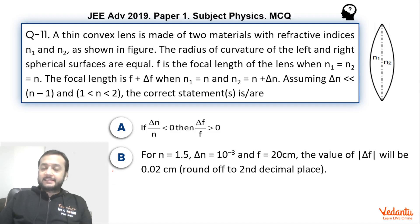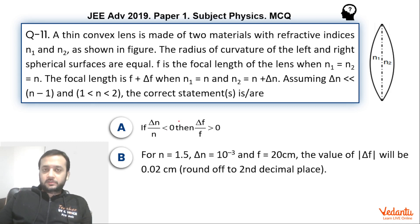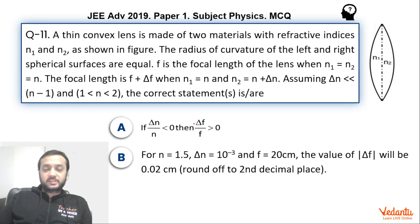Hi dear students! Let's see this question that came in JEE Advanced, Paper 1, Physics, in the year 2019. The question was based on the topic of Optics and was on the marking scheme of multiple correct choice. This was based precisely from the topic of Lenses and was one of the better questions in Paper 2. Some students found difficulty in this and hence left out this question. Many students also adopted the differentiation method and ended up doing it wrong.